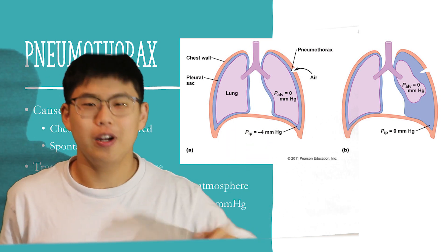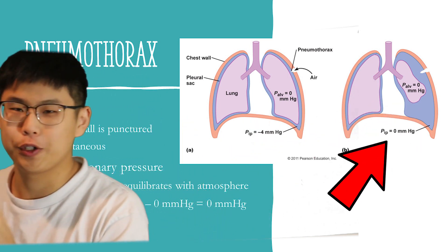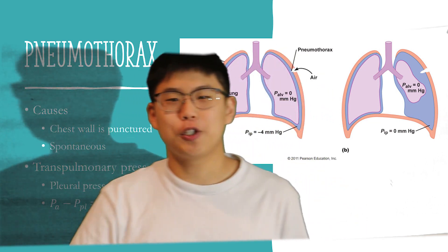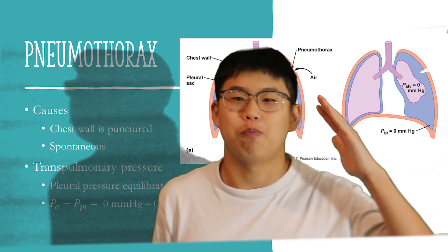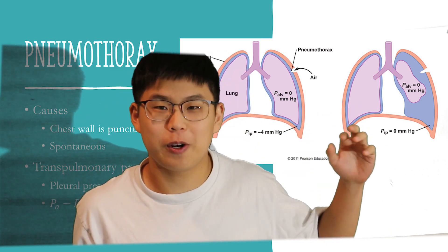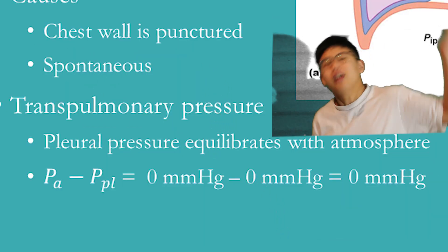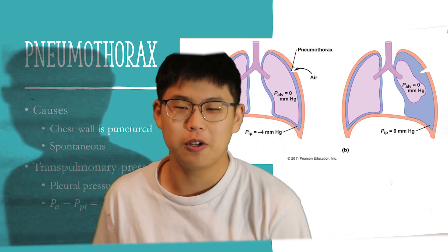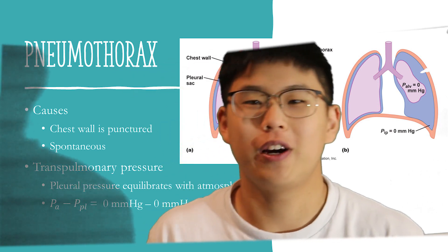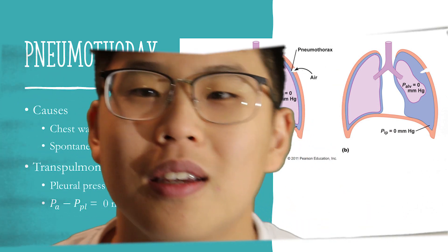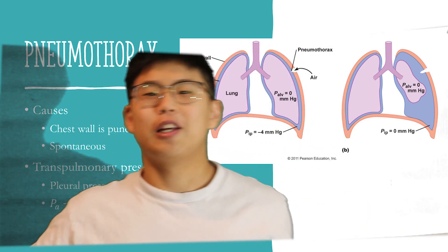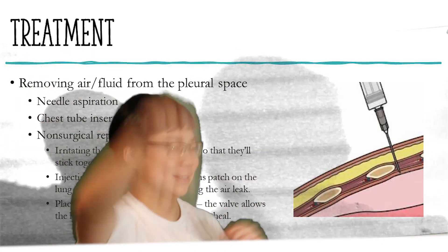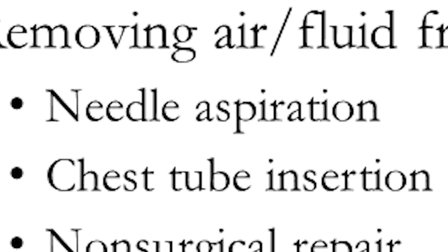In the puncture case, the lung is unable to reattach to the chest wall because the pleural space pressure equilibrates with the ambient barometric pressure through the air leak from the puncture. Since both the alveolar pressure and the pleural pressure are the same as barometric pressure — set as zero mmHg — the difference between the two is zero. Without a positive transpulmonary pressure and without surface tension to maintain the negative pressure in the pleural space, there is no force to hold the lungs open.